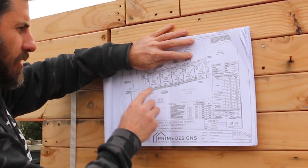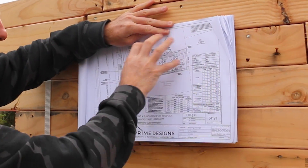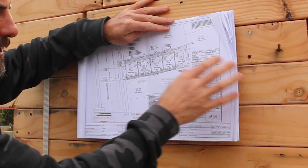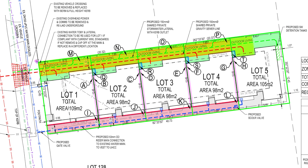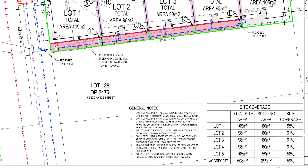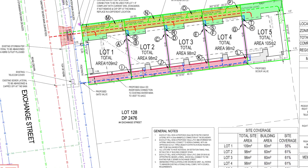Here we've got the scheme plan showing the five lots in relation to the boundaries and the services. This talks about what each lot is going to end up with — how we're chopping up the 508 square metres into give or take 100 square metre lots, 60 square metre buildings, site coverage. Basically they are just high level concepts. Once signed off, a good scheme plan will become the basis for all your other documentation.